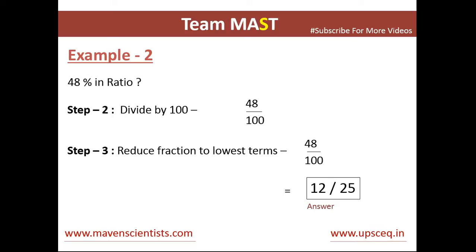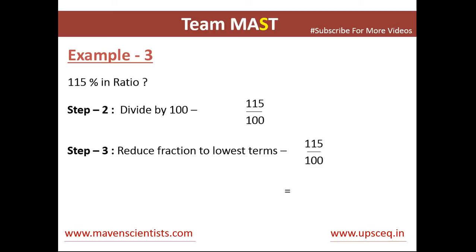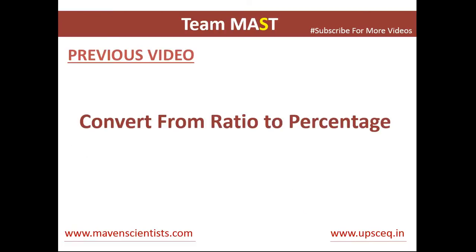In example 3, we have 115%. We divide 115 by 100, then divide each of the terms by 5 to get the lowest possible fraction, which is 23 divided by 20. That is the answer. You can also watch our previous video on how to convert a ratio into percentage, which is the exact opposite of this.